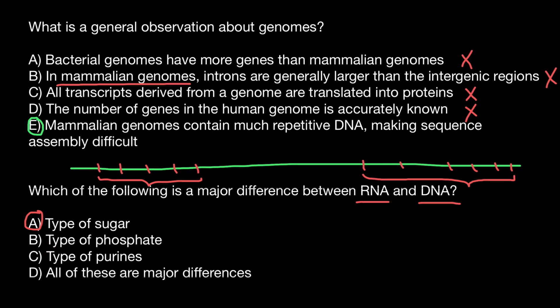Both RNA and DNA have the same phosphate, and the type of purines and pyrimidines would also be the same. So the only correct answer is answer A. That's all for today — subscribe and see you in the next video. Goodbye.